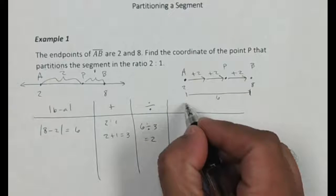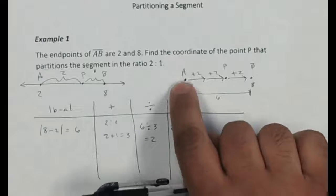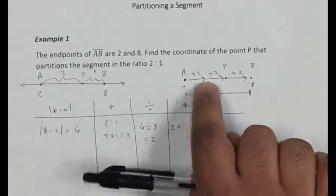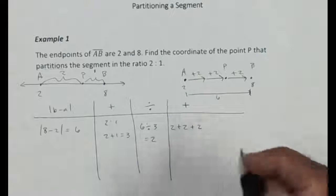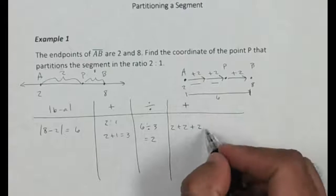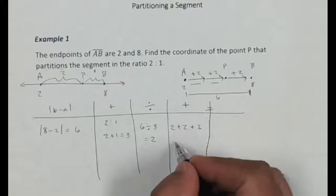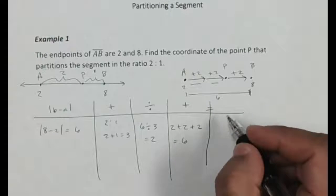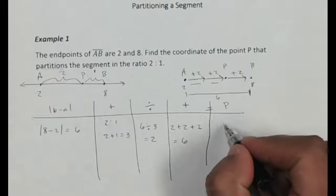Okay, so then I want to add again. I'm going to take my 2, my original value of 2, my point A, and I want to add these two partitions or these two pieces, so it's going to be plus 2 plus 2 because they're two parts. Now, when I add those, that gives me 2 plus 2 plus 2 would be 6. Okay, so that tells me that my point P is going to be at 6.